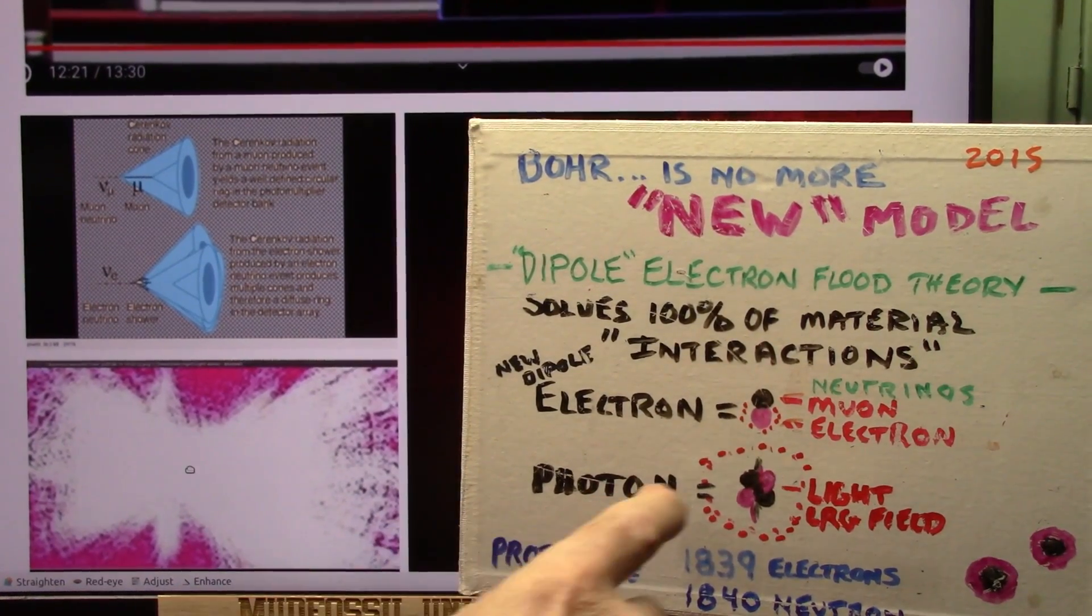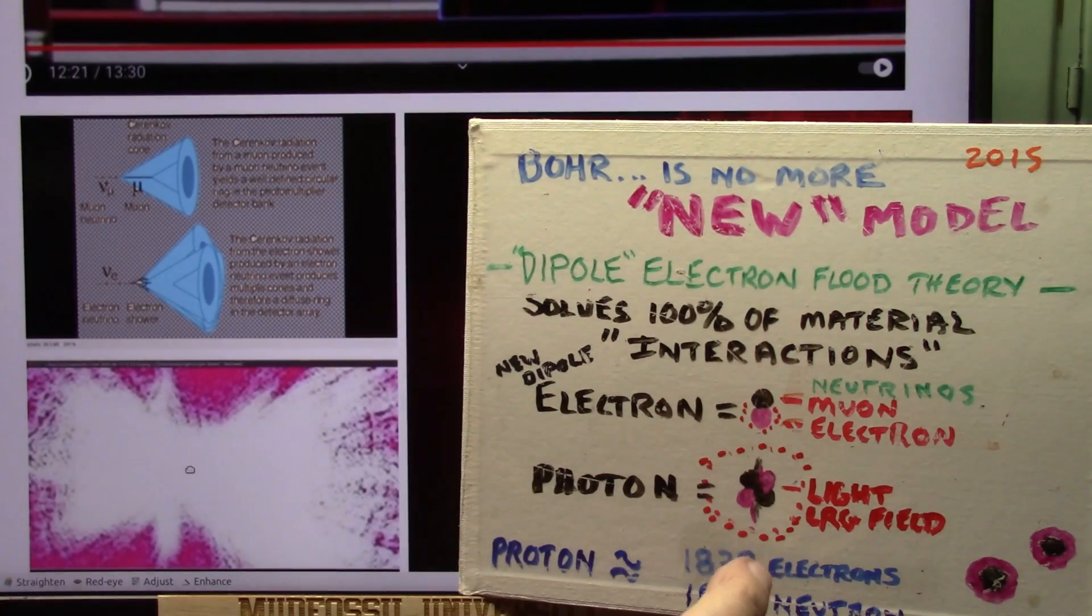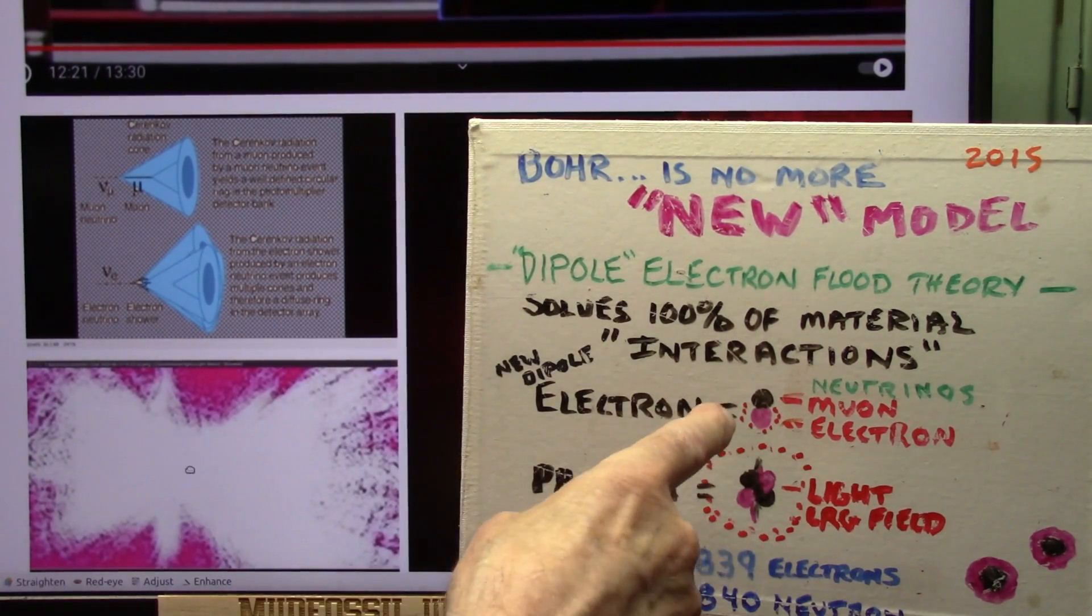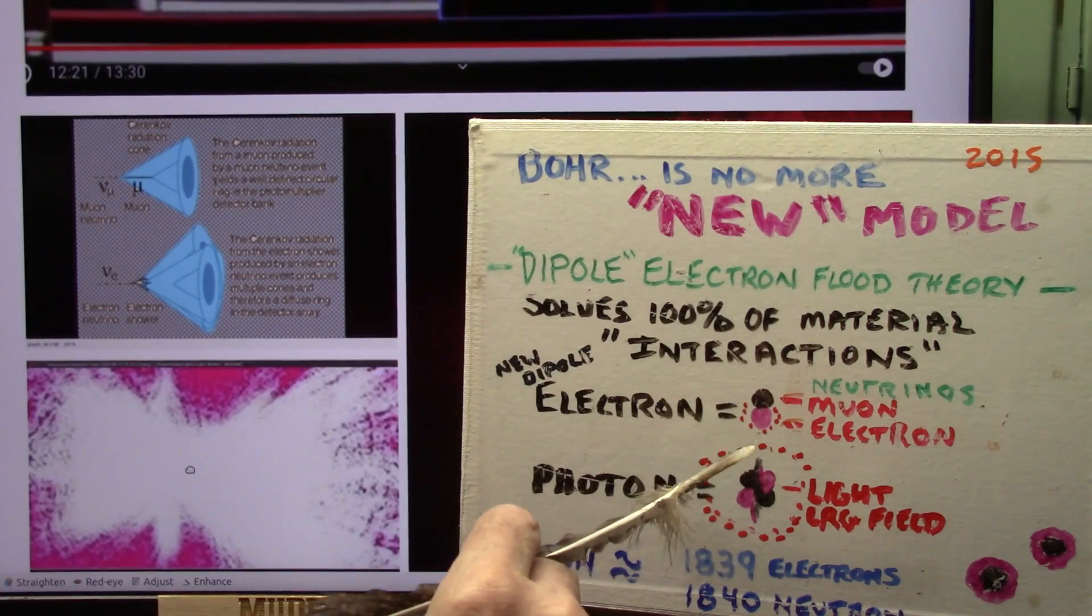Now, you saw the particles. This is the new model. Dipoles. Everything is made of dipoles. Nothing but dipoles. Everything is made of those two particles right there. The black one and the glowy one.